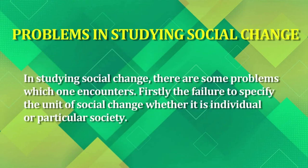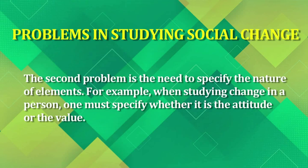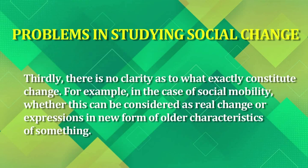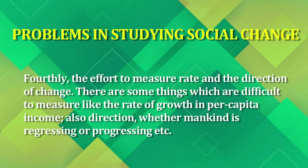There are some problems in studying social change. One encounters the problem of specifying the unit of social change — whether it affects the individual or the whole society. There is also the need to specify the nature of the elements, and a lack of clarity as to whether something constitutes change or continuity. Measuring the rate and direction of change is very difficult. Still, understanding social change is necessary to understand a society, and today we have explored various aspects of social change. Thank you.